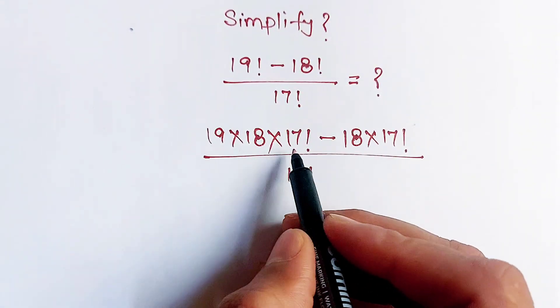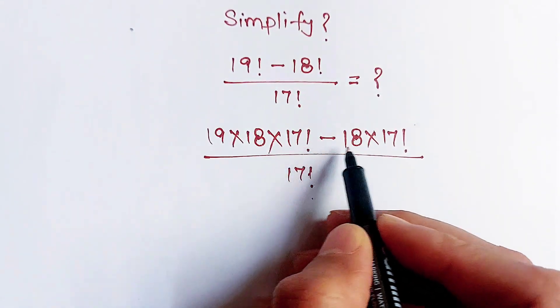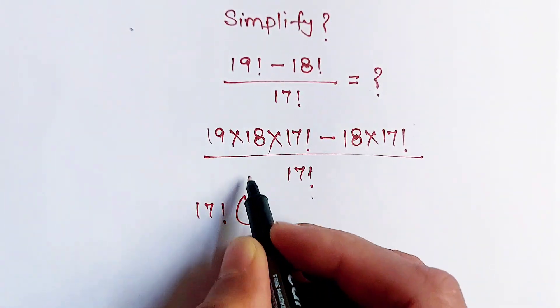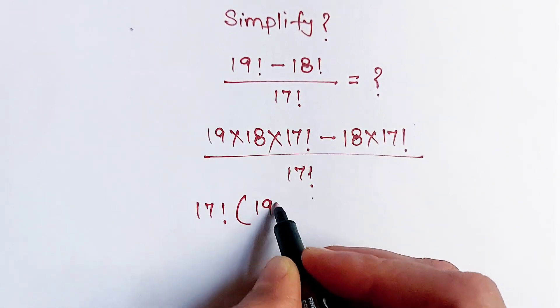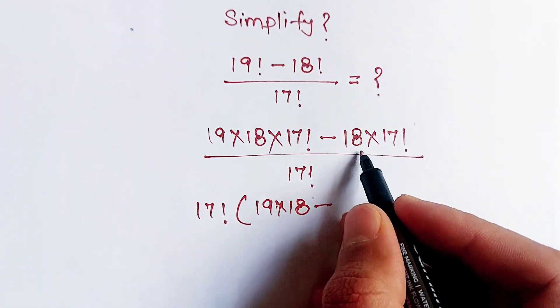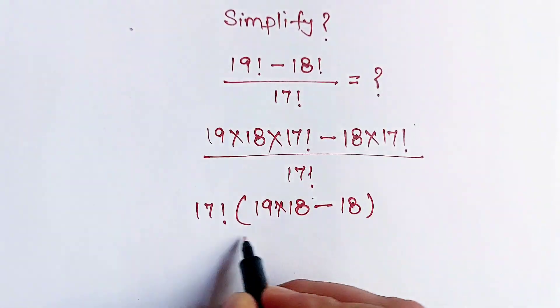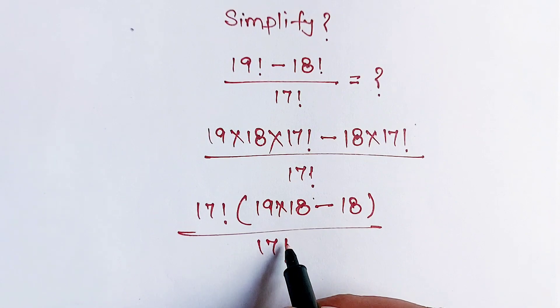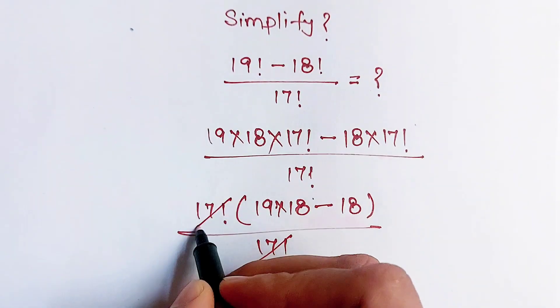Now we will take out this 17 factorial as a common term from both these terms. 17 factorial common out and this left 19 into 18 minus, and here 18, divide by 17 factorial. Now this 17 factorial cancel out each other.